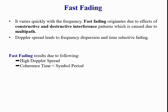Fast fading varies quickly with frequency. It originates due to constructive and destructive interference patterns caused by multipath. Doppler spread leads to frequency dispersion and time-selective fading. Fast fading results from two factors: high Doppler spread, and coherence time less than symbol time. In a fast fading channel, the impulse response changes rapidly within the symbol duration, and it occurs at very low data rates.